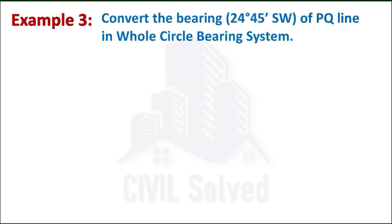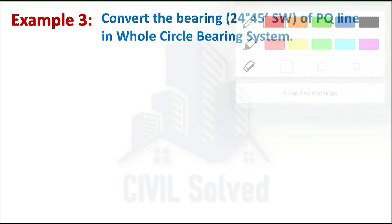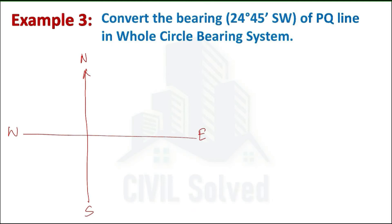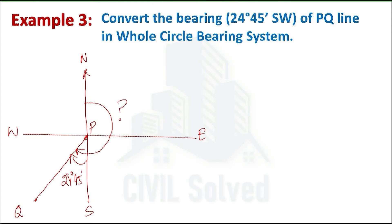Example number three: line PQ has its bearing given in the quadrantal bearing system and we are asked to convert it into the whole circle bearing system. Drawing the sketch, the line is in the southwest quadrant with a bearing of 24 degrees 45 minutes. To convert to WCB, the angle must be measured from north clockwise. We add 180 to 24 degrees 45 minutes to get the required angle.